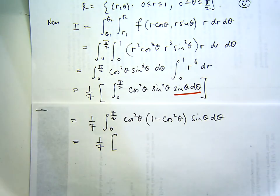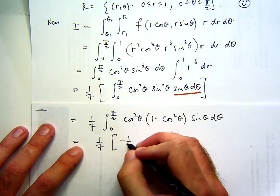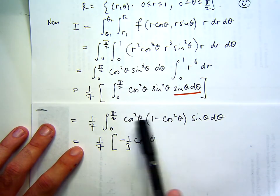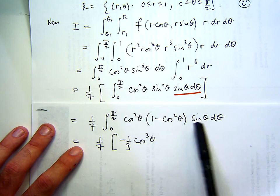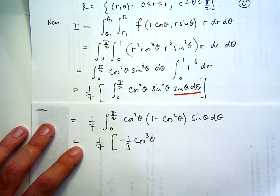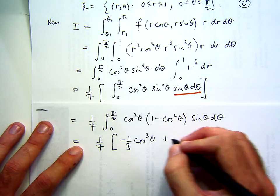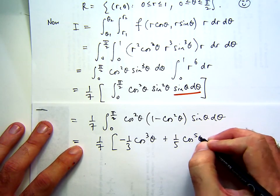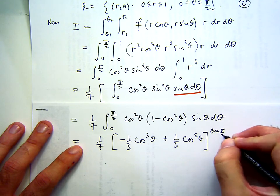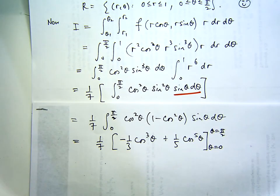So the first one will be negative one-third cos cubed, and we've got negative cos to the power four times sine. That'll go to something like cos to the power five, but really we go to one-fifth cos to the power five. And then it's just a matter of plugging in the limits of integration.